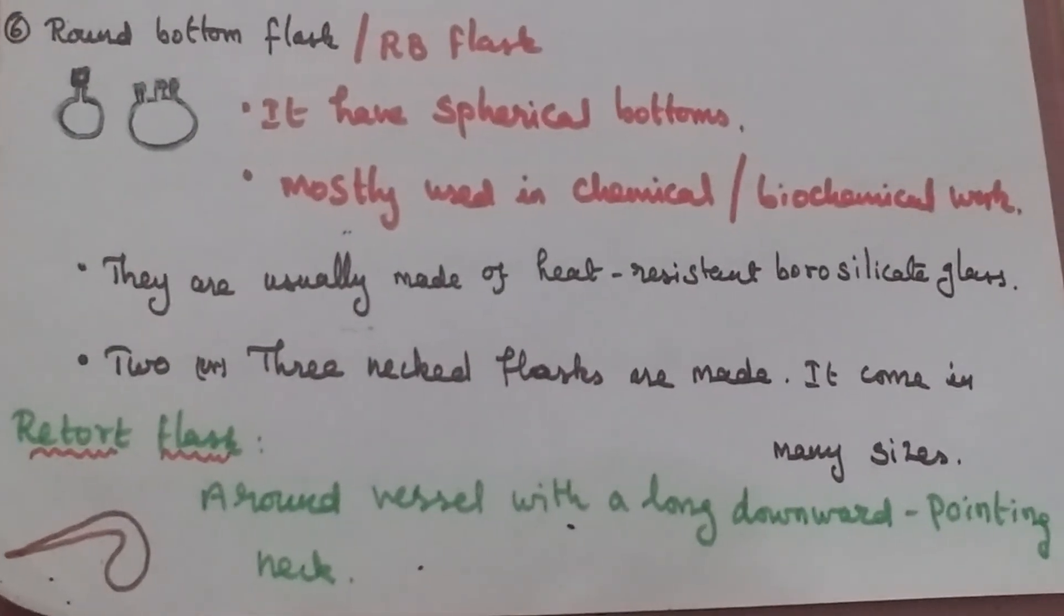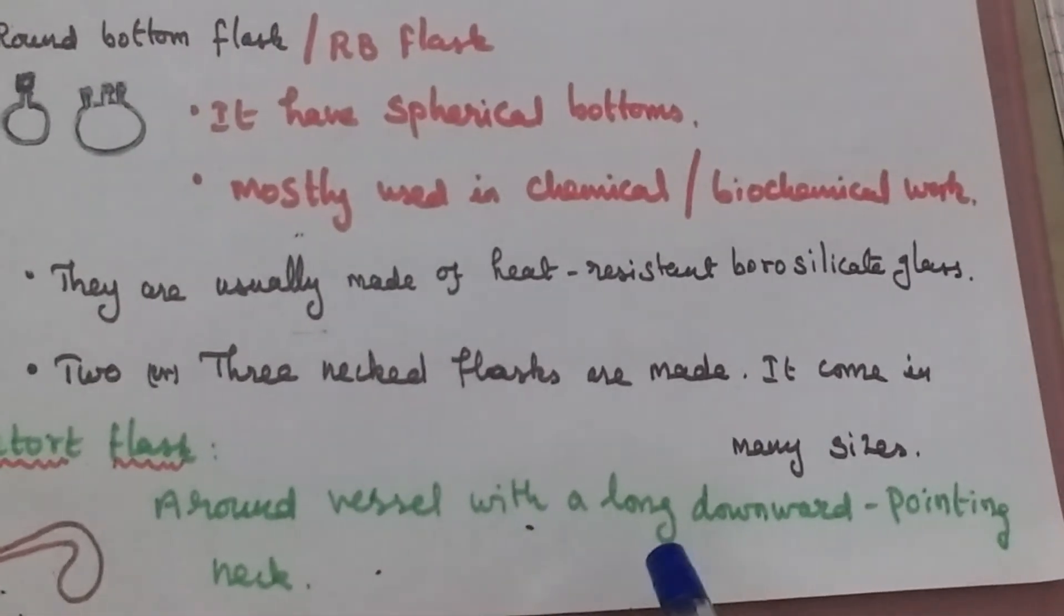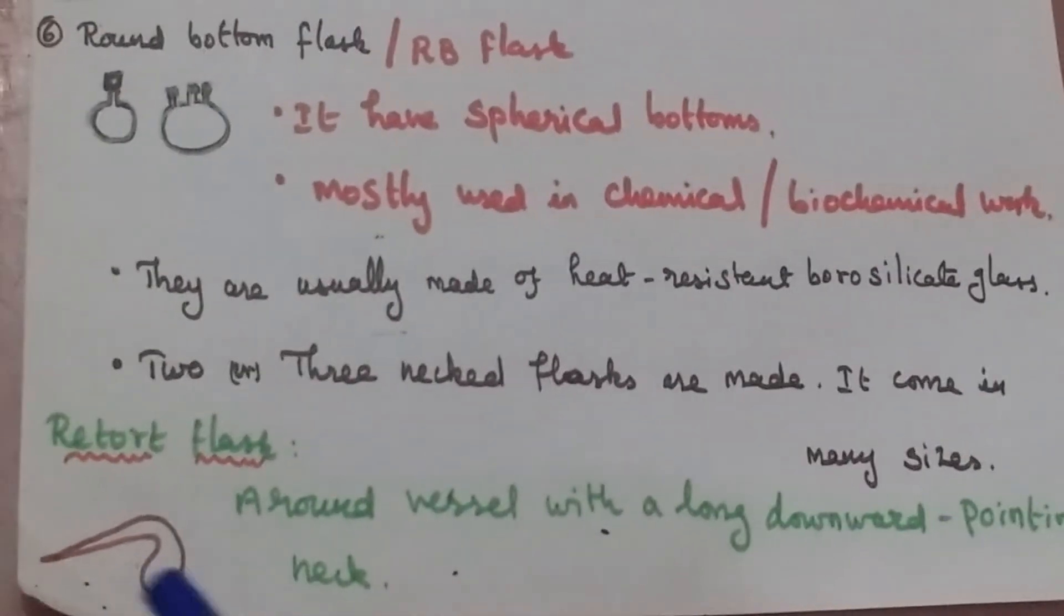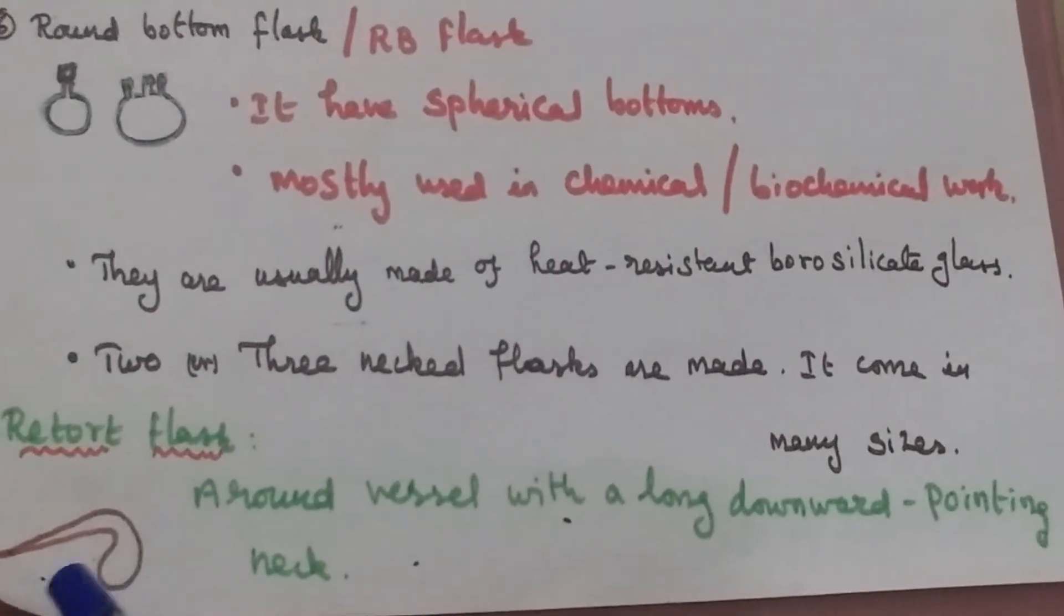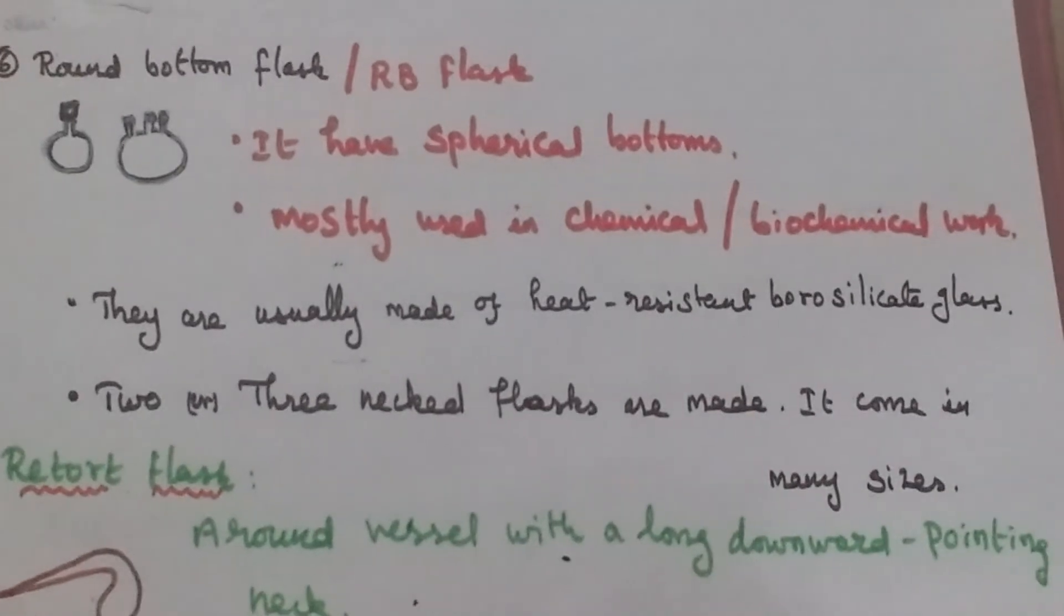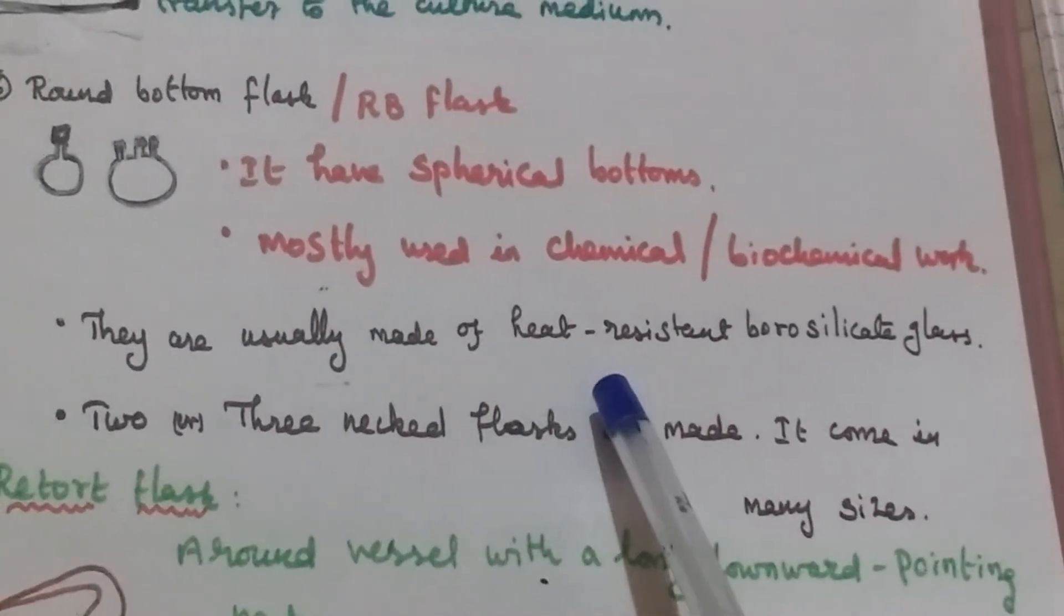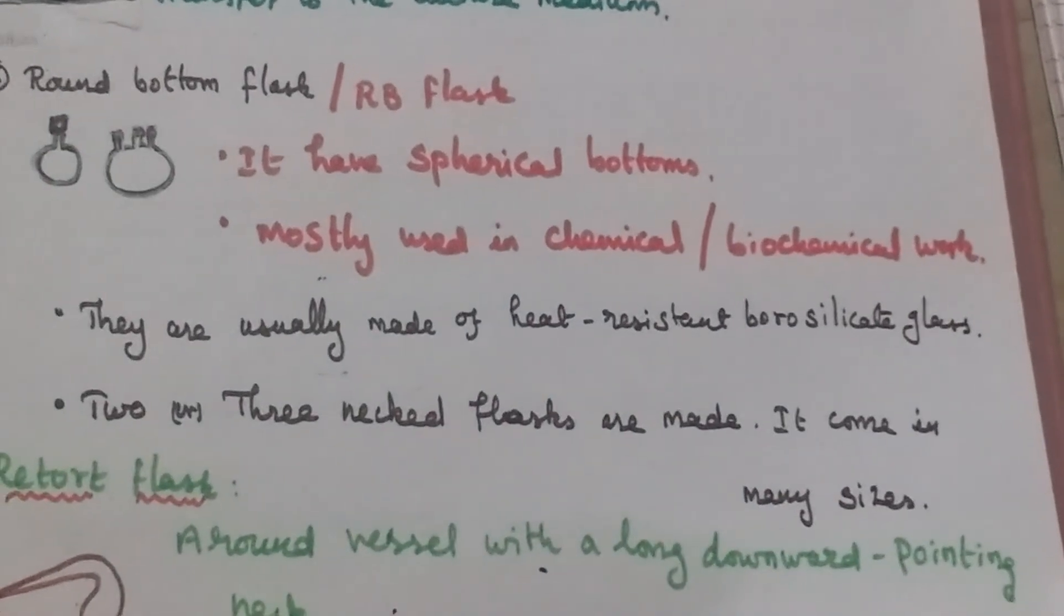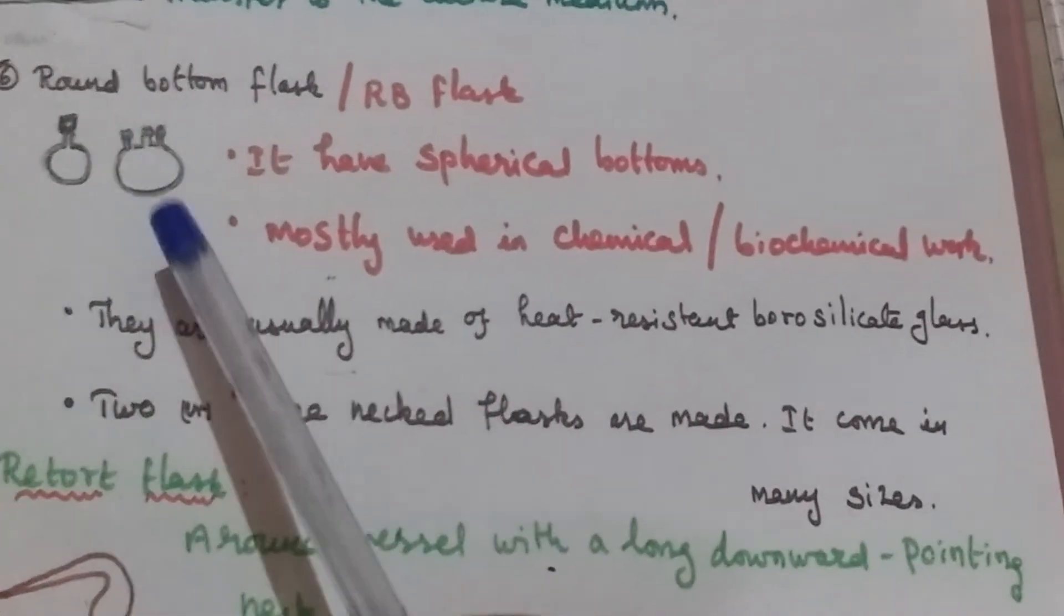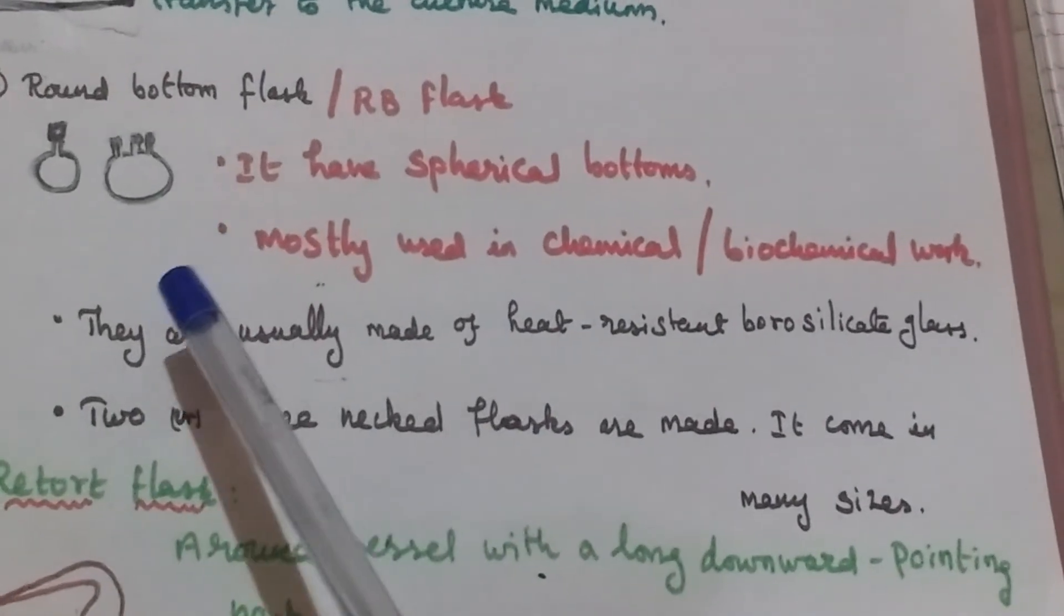Last is the retort flask, a round vessel with a long downward-pointing neck. Both these flasks are used for distillation. They are usually made of heat-resistant borosilicate glass and come with two or three necks in many sizes.